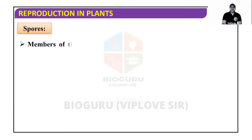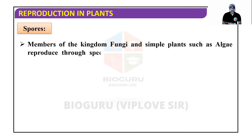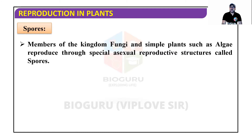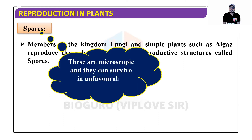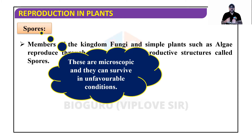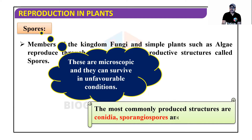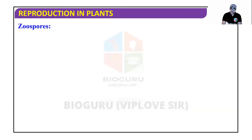Members of the kingdom Fungi and simple plants such as algae reproduce through special asexual reproductive structures called spores. These are microscopic and can survive in unfavorable or harsh conditions — whether excessive or insufficient moisture, very high or very low temperature. The organism converts itself into spores and in spore form can survive for days, months, or even years. The most commonly produced structures are conidia, sporangiospores, and zoo spores.